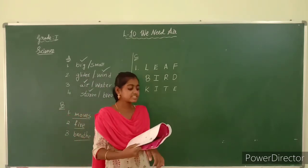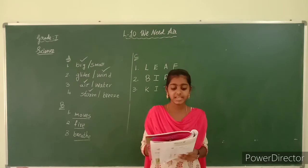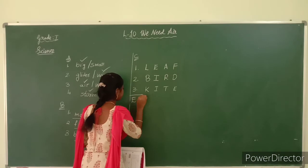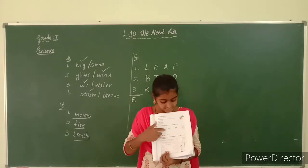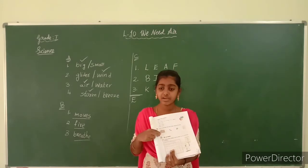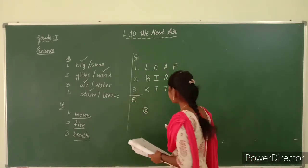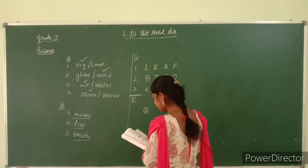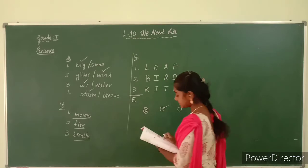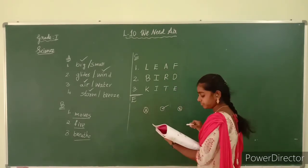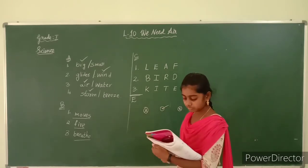Come to page number 79. Exercise D. Look at exercise D — tick the things that will be blown away by the wind. First one: a box — can a box fly when air comes? No. Put a cross. Next: a pencil — can a pencil fly when air comes? Yes, tick it. Last one: paper — paper can fly when air comes. Tick the second and fourth ones.